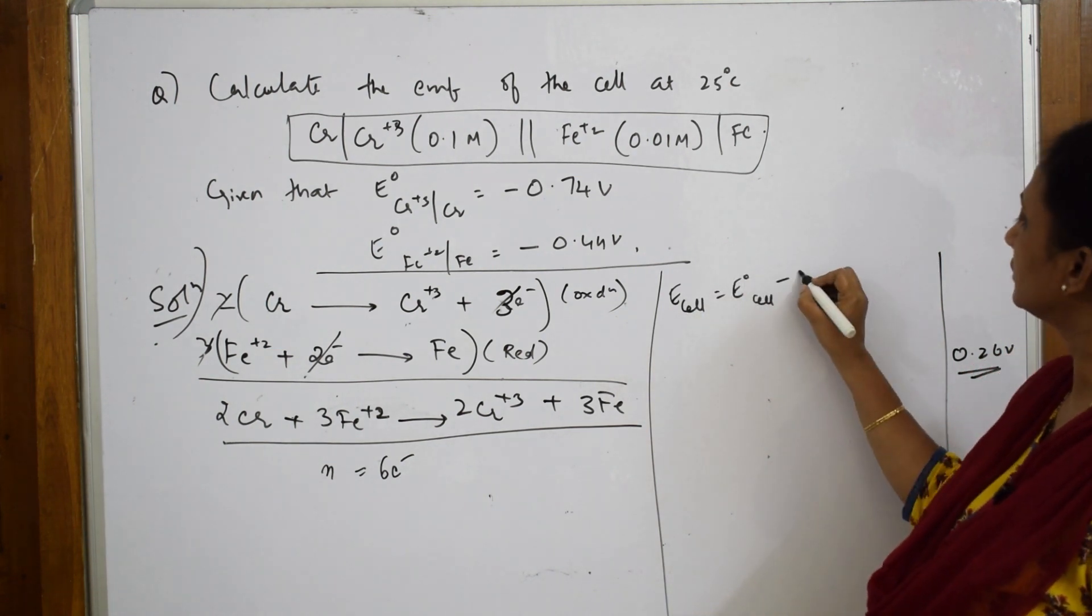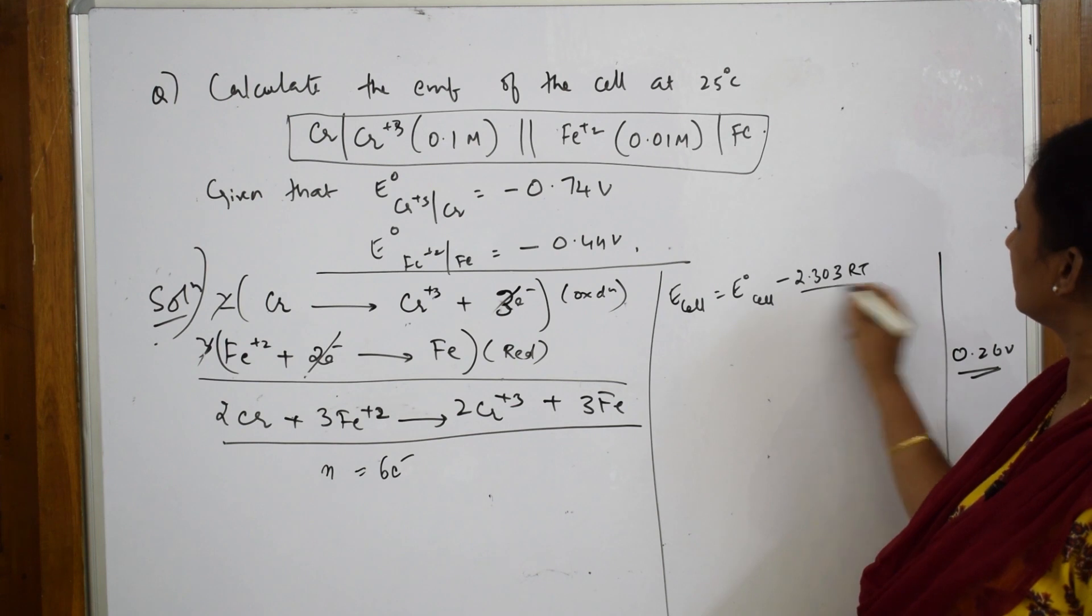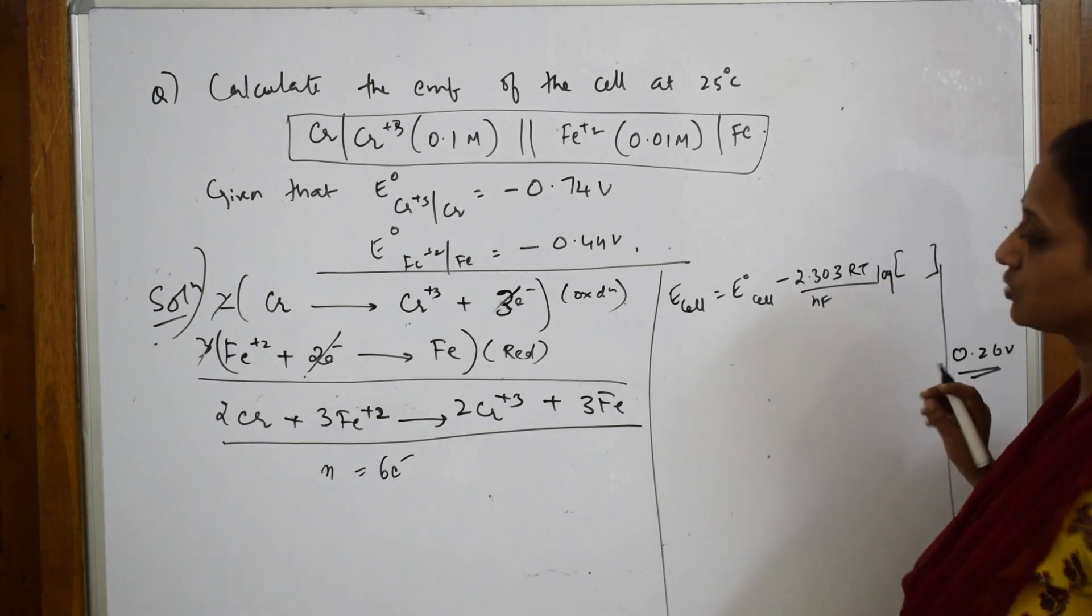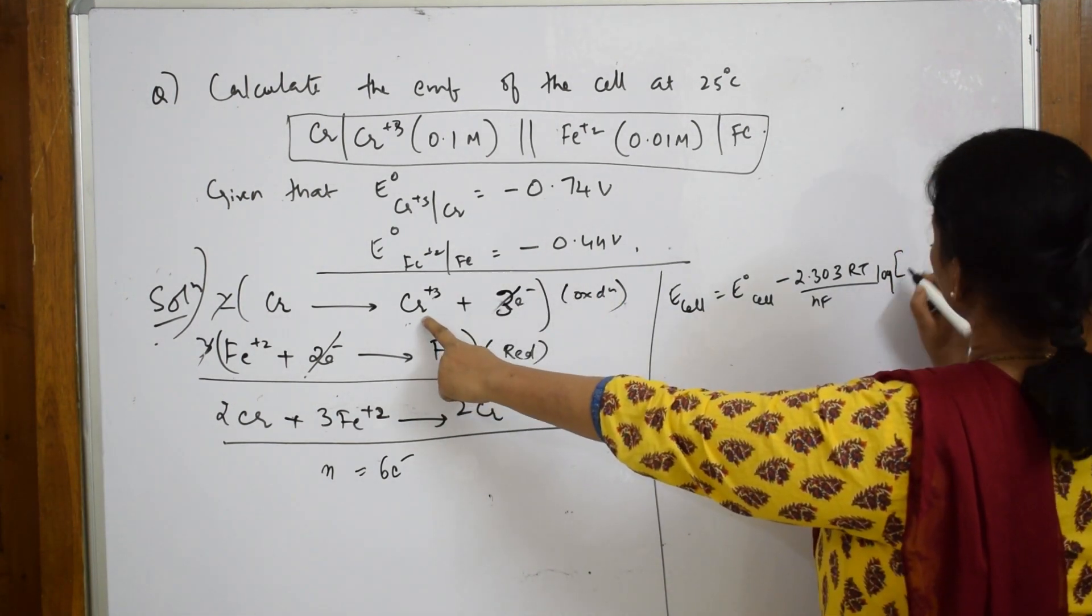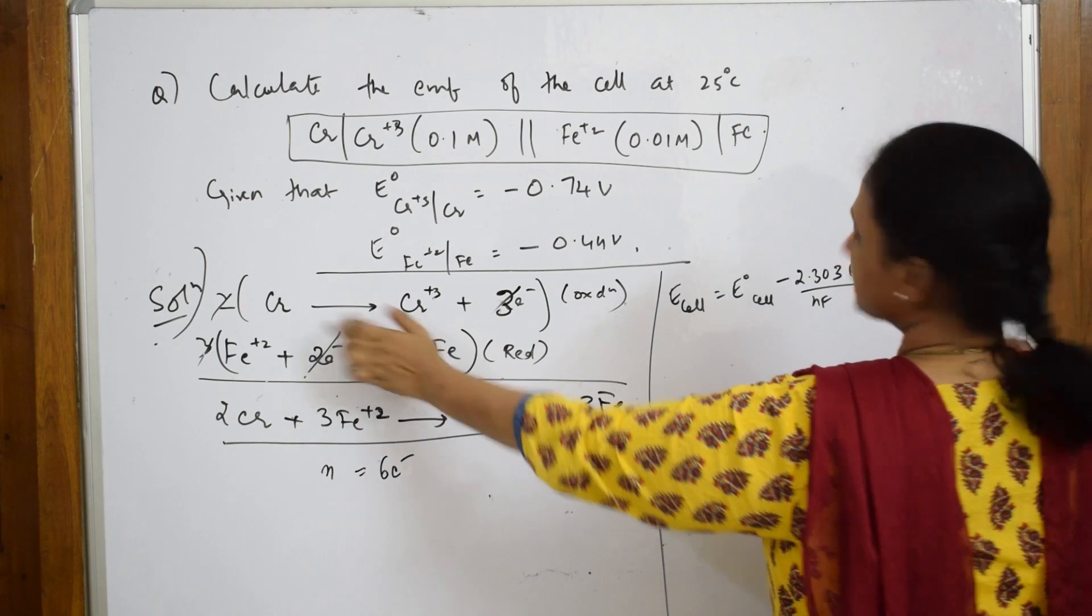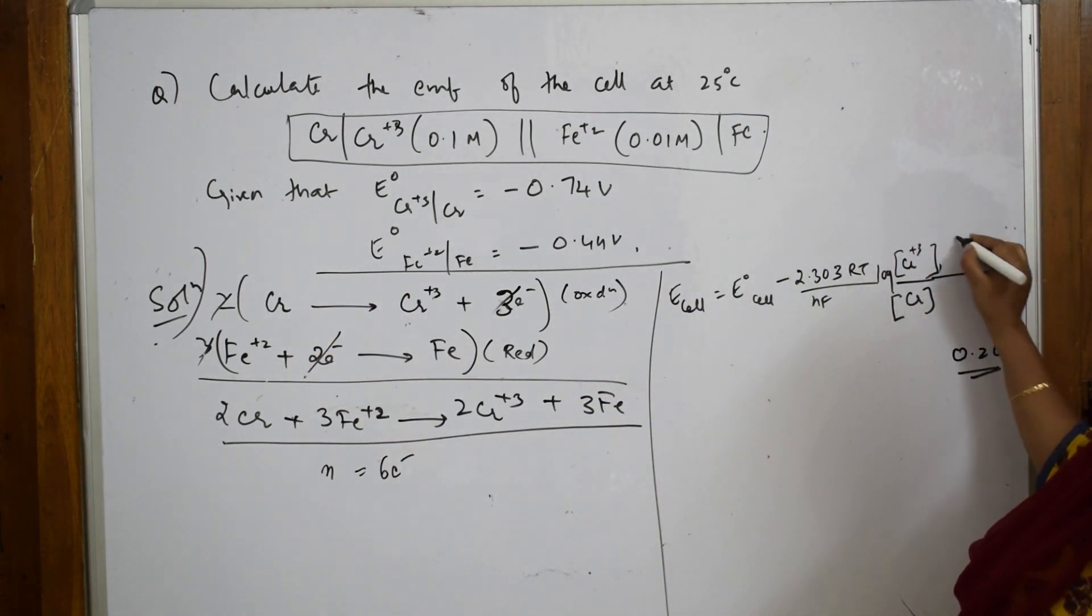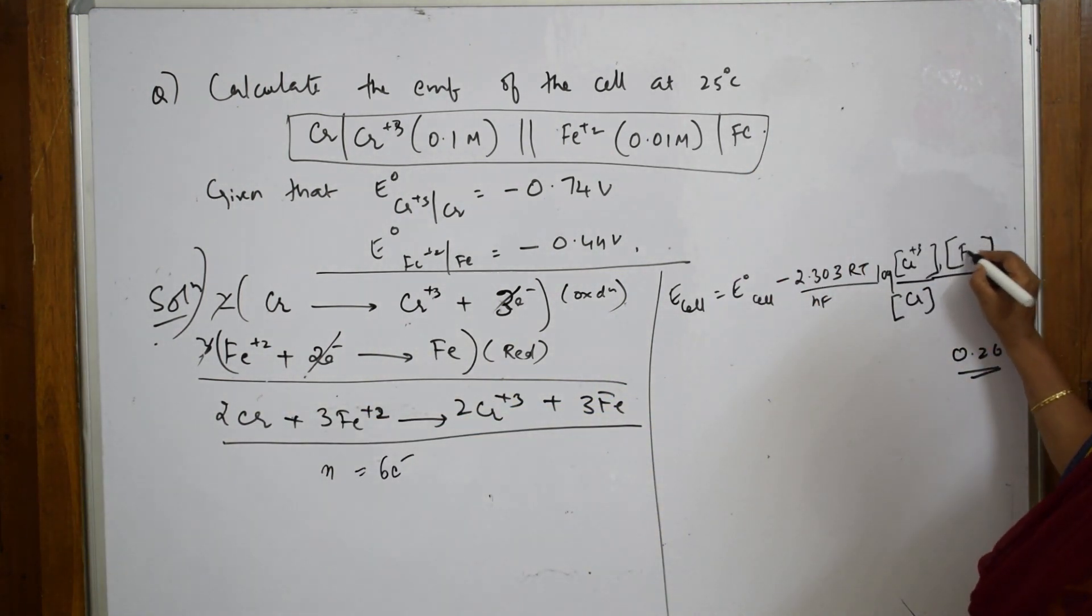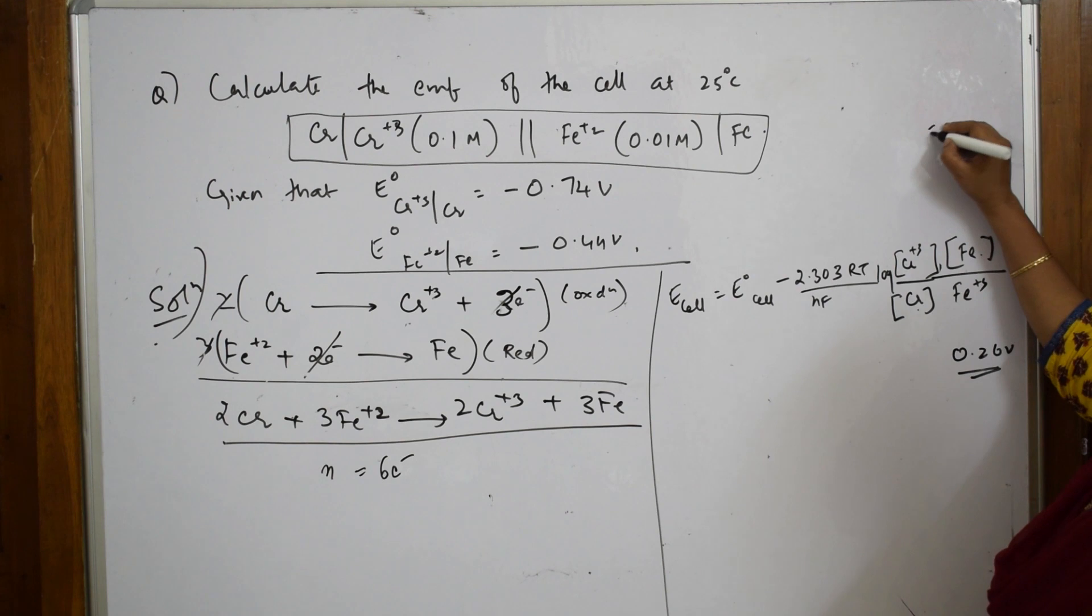E_cell = E°_cell - (2.303RT/nF) log(products/reactants). For this equation, the product is Cr³⁺ and the reactant is Fe²⁺, so it's [Cr³⁺]/[Cr] × [Fe]/[Fe²⁺].